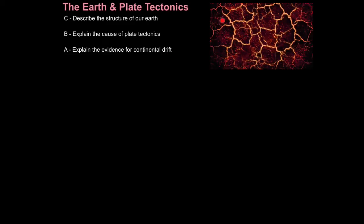We live on a thin layer of the Earth known as the crust, and the crust is cracked and divided into giant moving plates. We actually don't know a great deal about what's going on under our very own feet. In fact, we know more about what's happening up in space than what's happening directly about 60 kilometres below our feet. Whenever we try to send machinery down there, the intense heat and pressure just destroys it, so it's very hard to collect data on our Earth's structure.